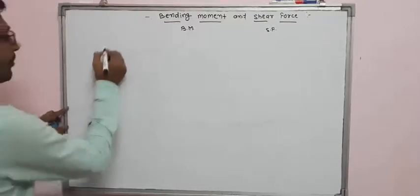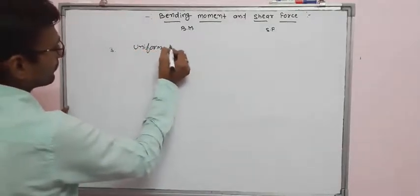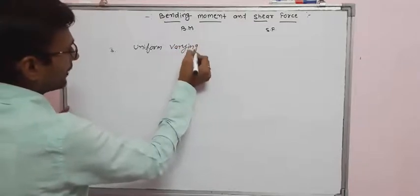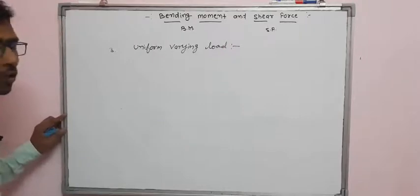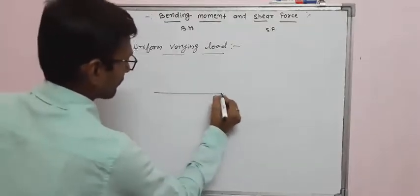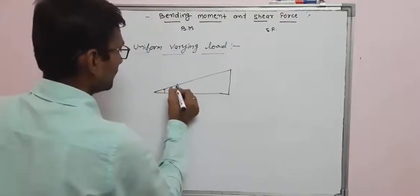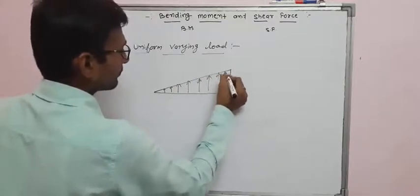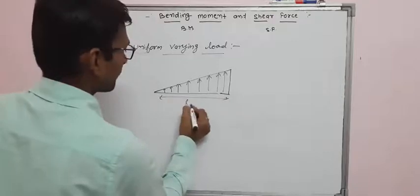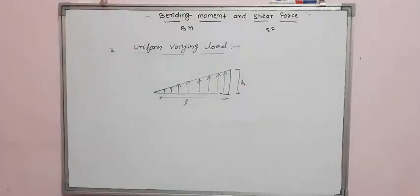The last type of loading is Uniform Varying Load (UVL). In UVL, the load varies — it increases from zero at one end to a maximum at the other end, forming a triangular distribution over the beam length.